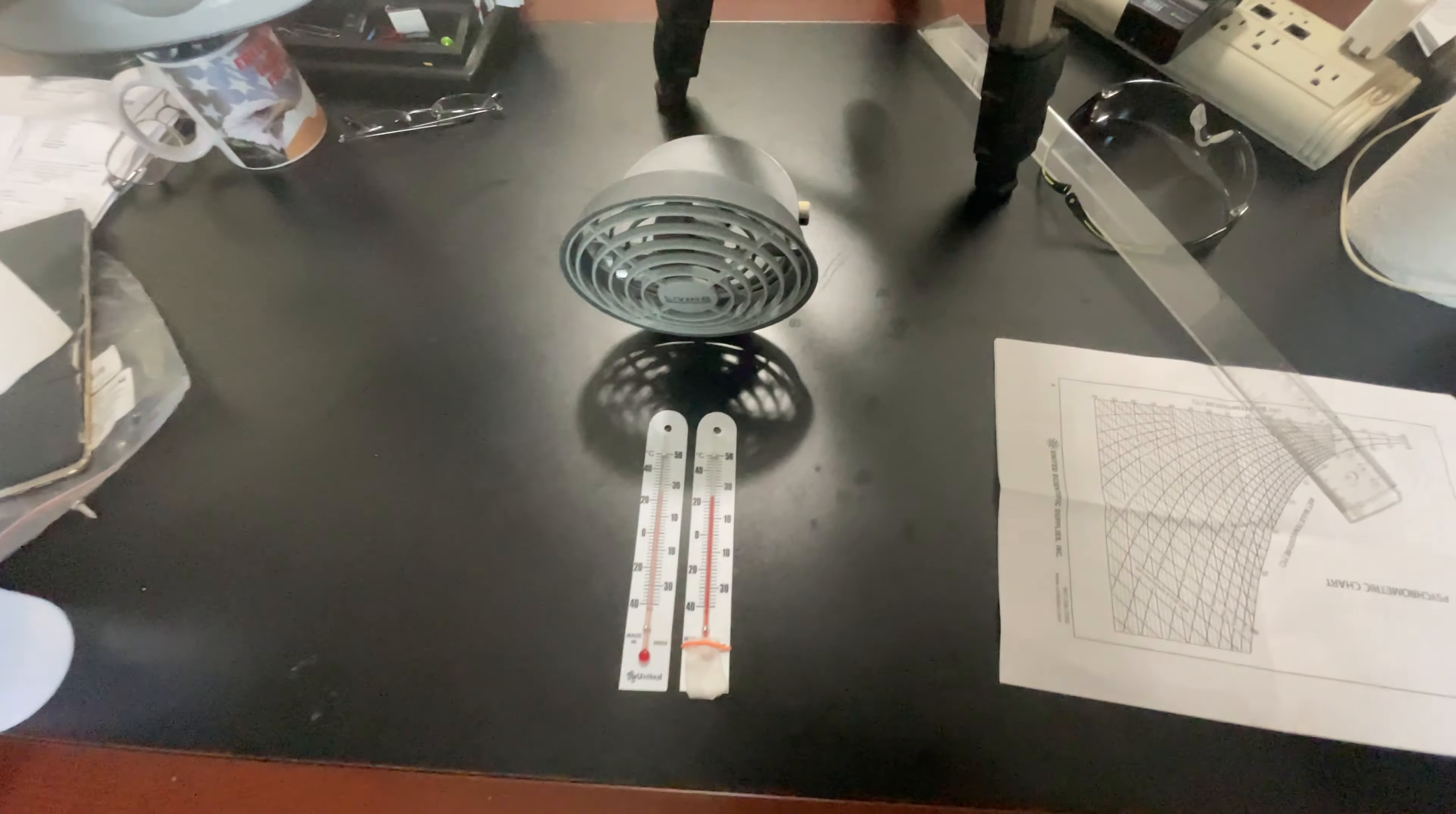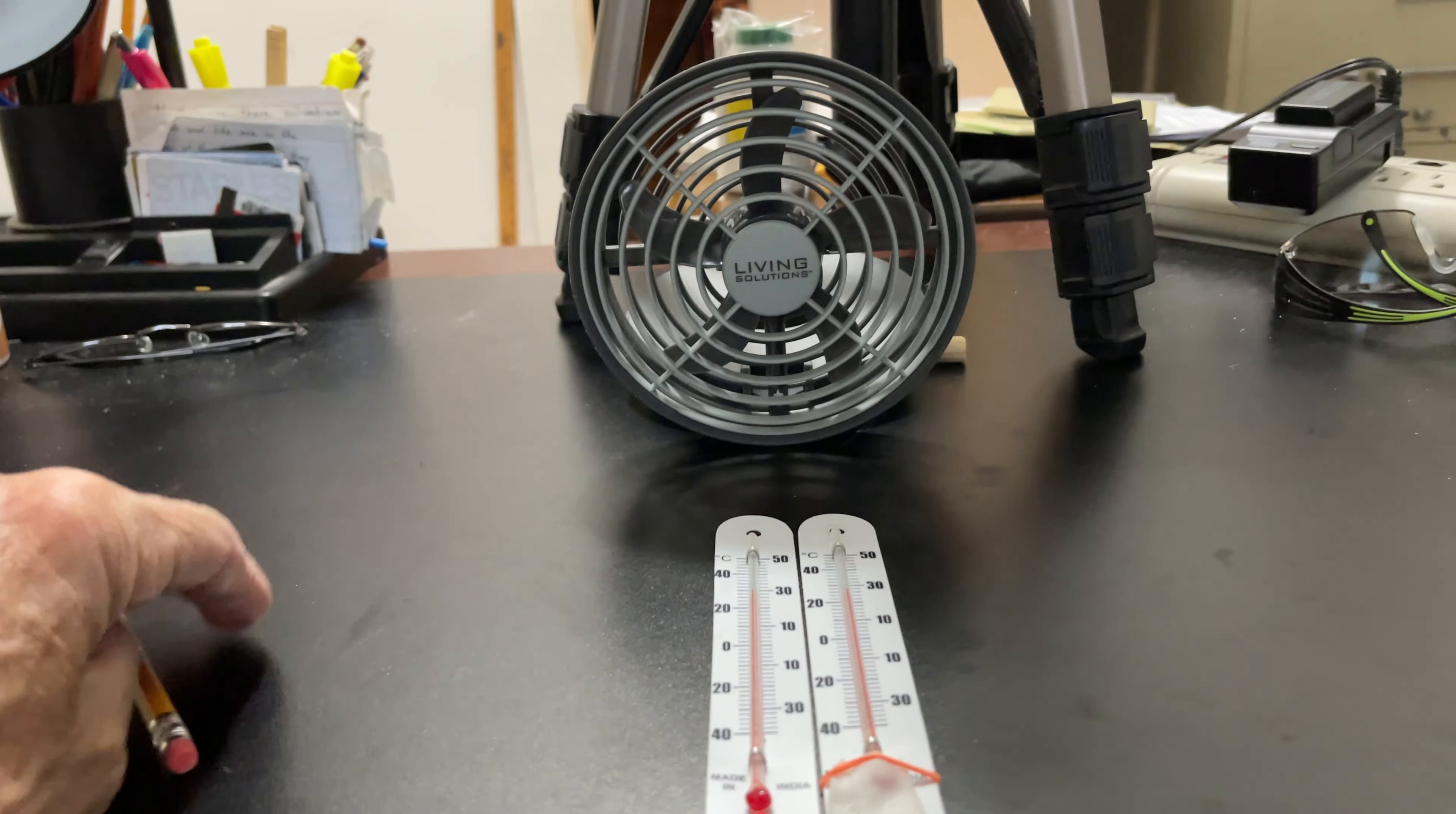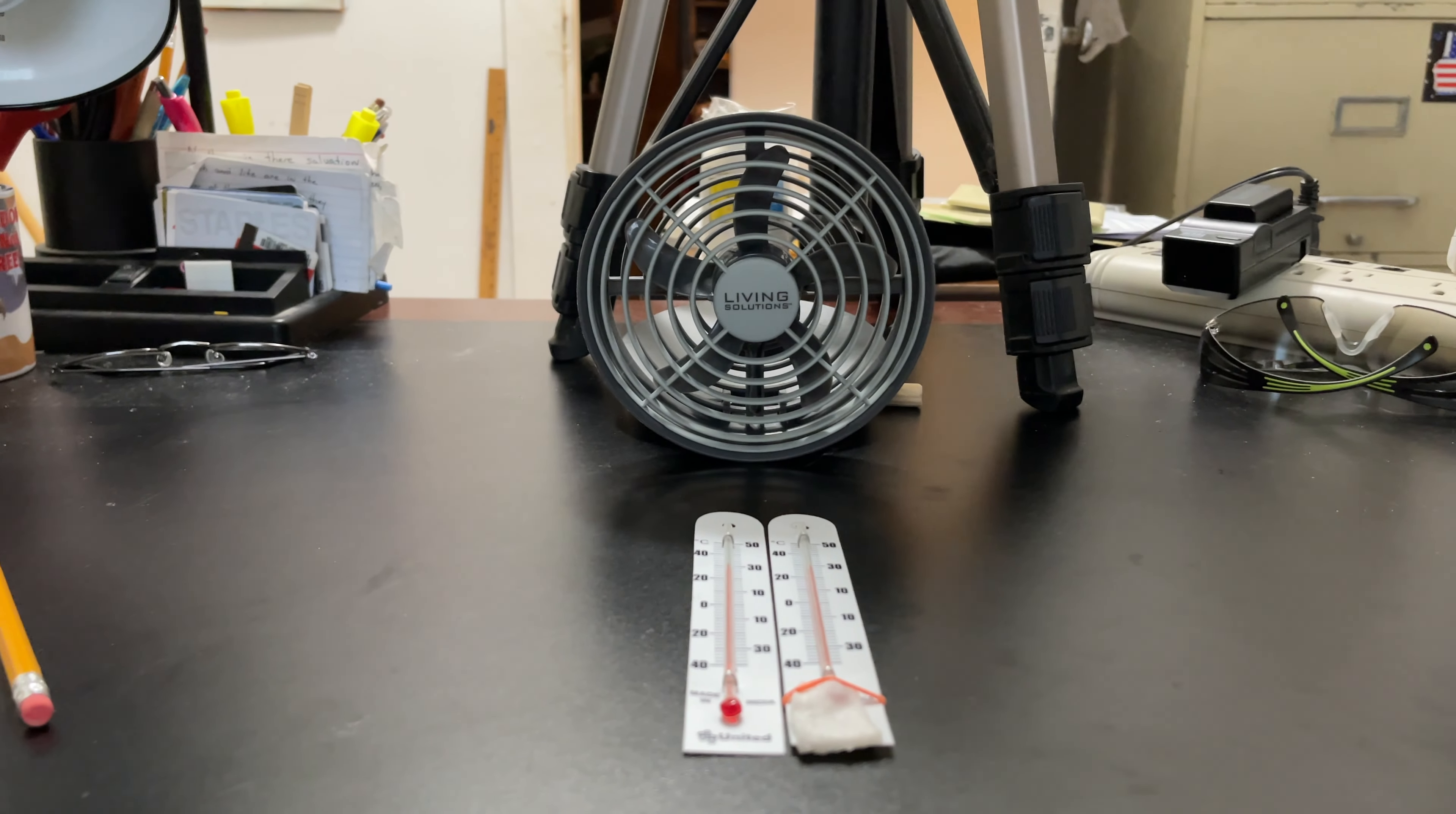Now, if you do not like twirling the thermometers around, you can do the same thing with just a fan to get the air movement. I have got our thermometers here. This is the dry bulb thermometer, that is the wet bulb. We have already put distilled water on it. I am going to turn on this fan here, so we can use that instead of twirling the thermometers around. Let me put this phone down and then get the fan started.